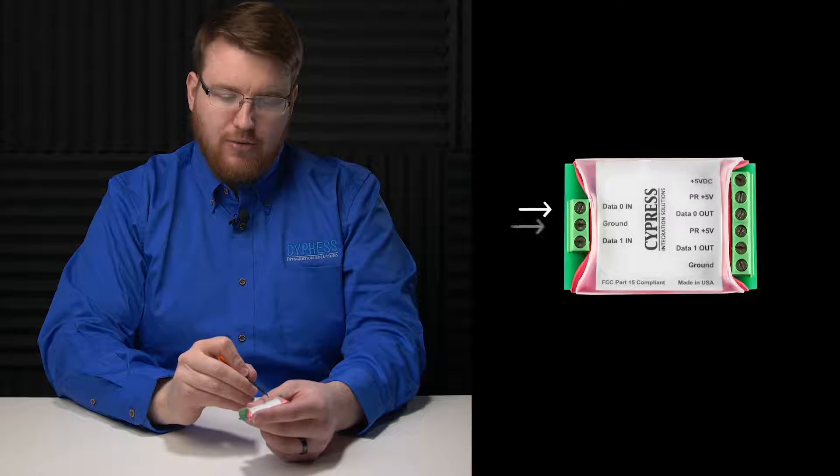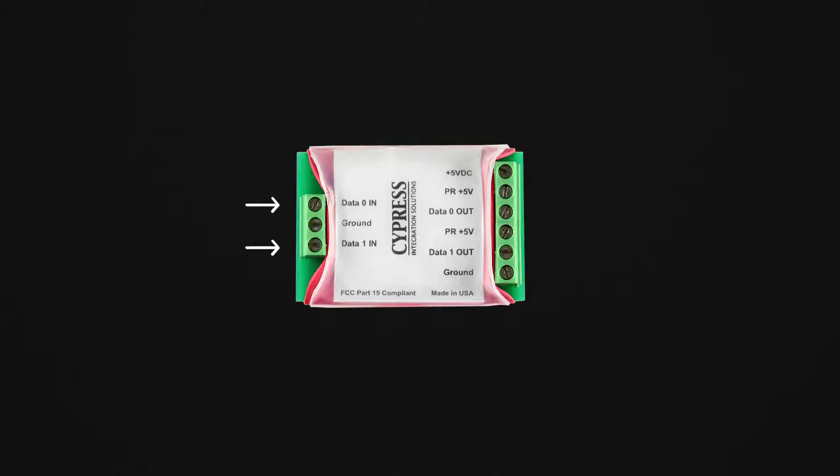There are three pins on the J1 header: Data Zero In, Ground, and Data One In. The Data Zero In and Data One In pins are open collector and accept Wiegand signals of 5 to 24 volts DC.